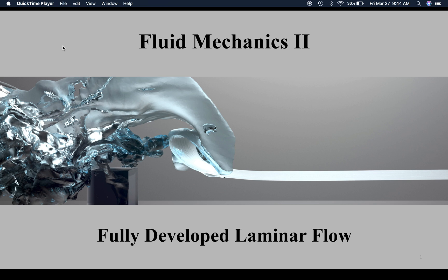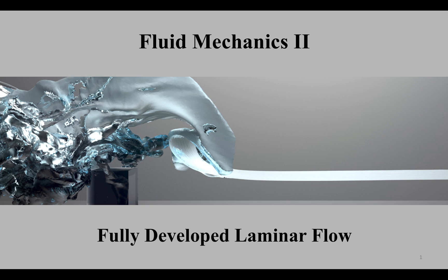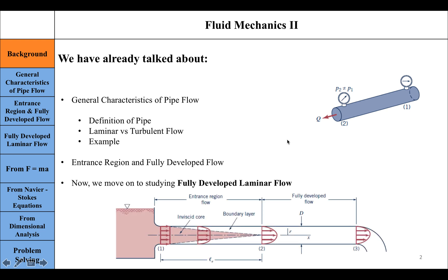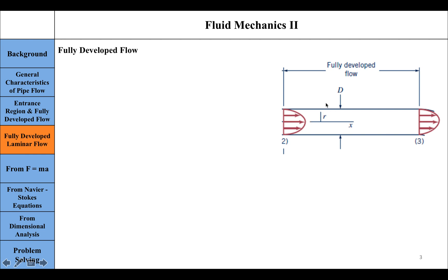In this video we will be talking about fully developed laminar flow within a pipe. A pipe is defined as a conduit or duct that is fully filled up and has a pressure gradient within it, which is the main driving force for the flow. In the previous lecture we talked about how flow in a long straight constant-diameter pipe becomes fully developed after a certain entrance length. One characteristic of this fully developed flow is that the velocity profile is the same at any cross-section of the pipe, whether the flow is laminar or turbulent.